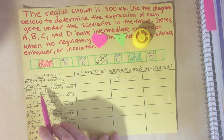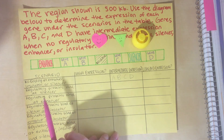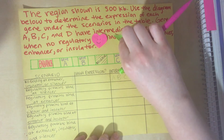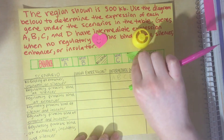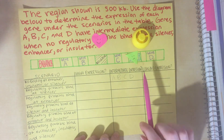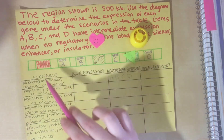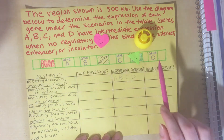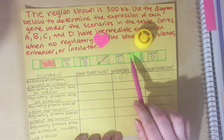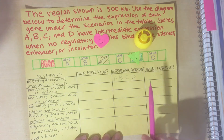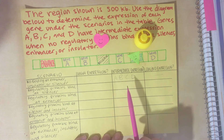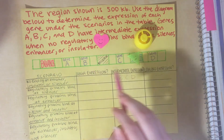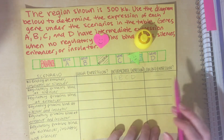The second scenario looks at regulatory proteins binding at just the silencer. When the repressor protein binds the silencer, it becomes active and can work on all genes in this 500 kilobase region — genes A, B, C, and D. The silencer is going to decrease the expression of these genes, and given that they have intermediate expression with no effects working on them, this will cause genes A, B, C, and D to all have low or no expression.